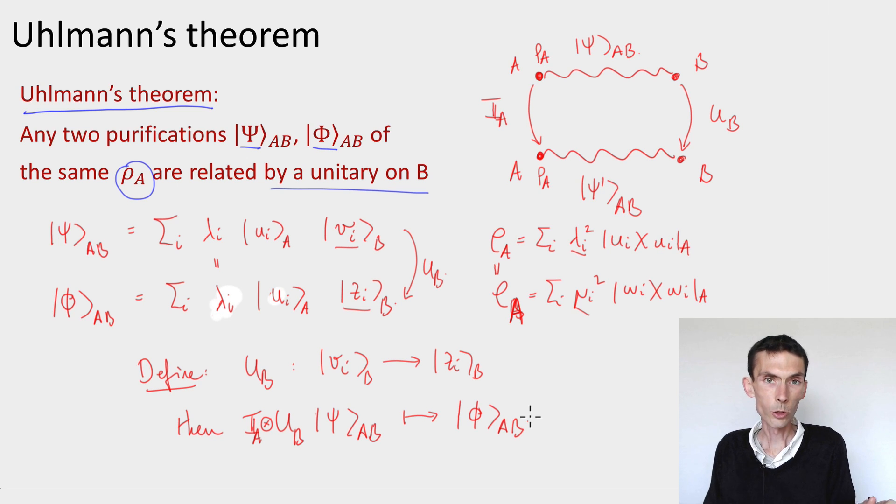Because they have the same reduced density on A, we know that we can choose such decompositions such that the Schmidt coefficients are the same and the Schmidt basis for the A system are the same. And then the unitary U_B will simply be a unitary that maps the Schmidt basis for the B system associated to the second state.